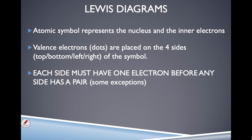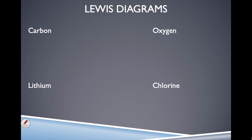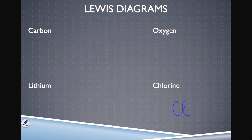These are the same examples we just did for Bohr diagrams. Let's start with chlorine. I draw the symbol Cl — written with a script L so it doesn't look like an I. Chlorine is in group 17, so it has seven valence electrons.